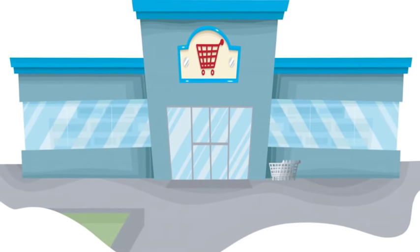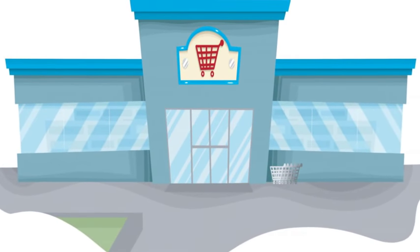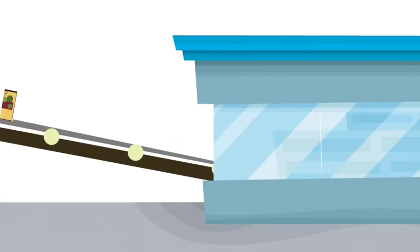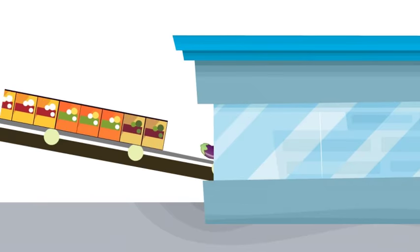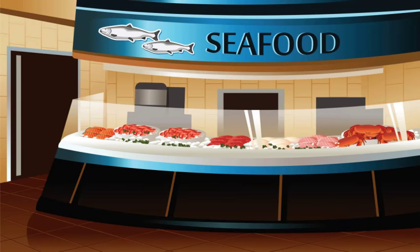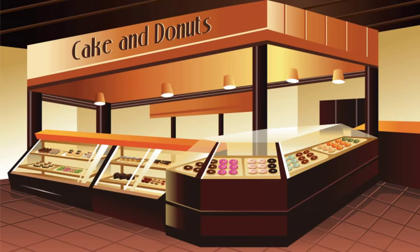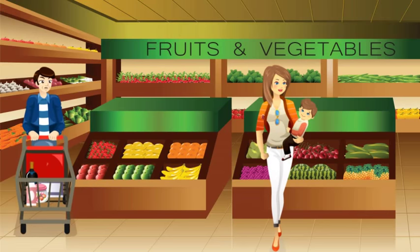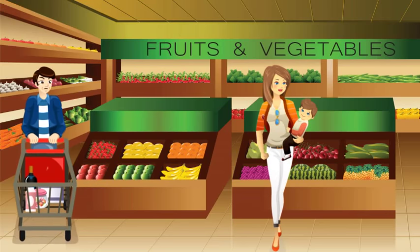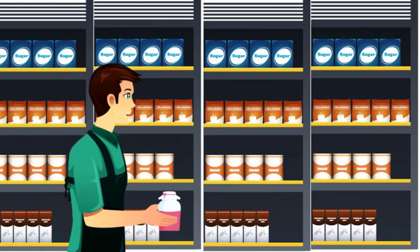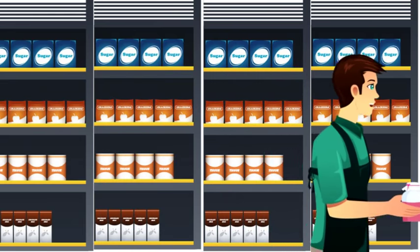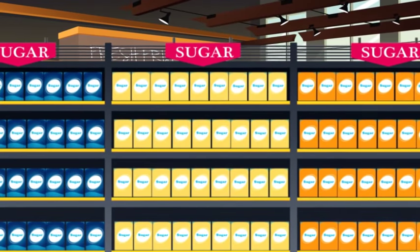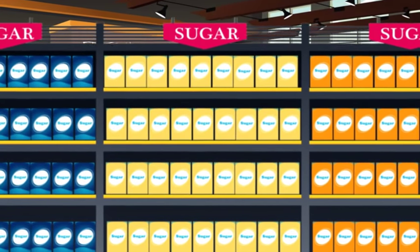A grocery store is a central place for what we need. Products are brought into the store in a predictable and efficient way. Each area of the store offers a category of food items or other products so shoppers can intuitively find what they're looking for. Grocery store workers ensure all of the products are positioned in the correct aisle and on the right shelf.